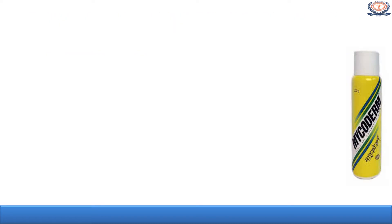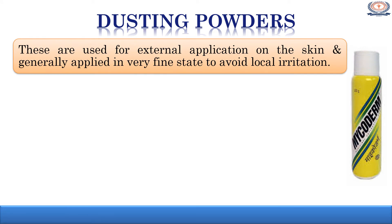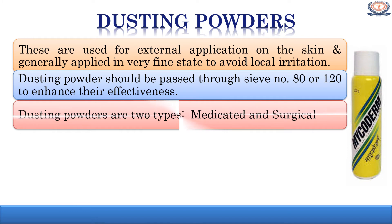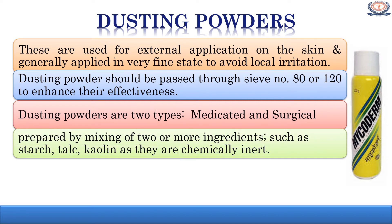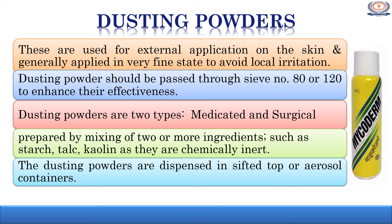The first type is dusting powders. Here you can see the marketed preparation, Mycoderm powder. Dusting powders are externally applied powders on the skin and are generally applied in a very fine state to avoid local irritation. These are mainly applied in a very fine state of subdivision so as to avoid local irritation. Hence, the dusting powders are passed through sieve number 80 or 120 to enhance their effectiveness. Dusting powders are of two types: medicated dusting powder and surgical dusting powder. These are prepared using ingredients like starch, talc, and kaolin, which are chemically inert in nature. They are dispensed in sifted top or aerosol type containers.